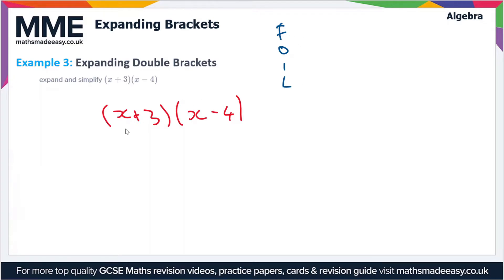FOIL is first, outside, inner, last. First is the first two terms of each bracket, so that's x squared. Outside is x times minus 4, giving us minus 4x. The inner terms are 3 and x, giving us plus 3x. And the last terms, plus 3 and minus 4, give us minus 12 when we multiply them together.